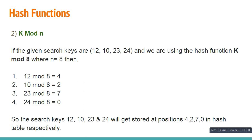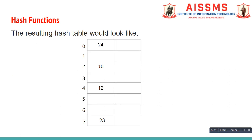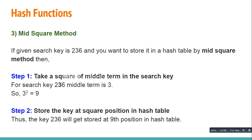Next is the mid square method. If the given search key is 236 and you want to store it in the hash table using the mid square method, then the first step is to take the square of the middle digit. For search key 236, the middle digit is 3, so 3 squared is 9. Then store the key at position 9 in the hash table, as the result of 3 squared was 9.